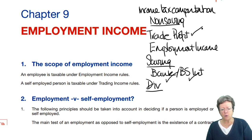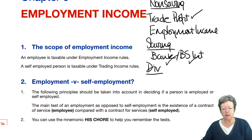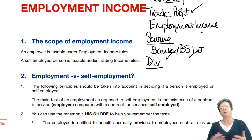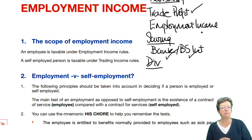So this chapter deals with employment income — income from a salary or a job. The scope of this: there are many rules, regulations, and legal cases that have built up over the years as to whether somebody is or isn't employed.